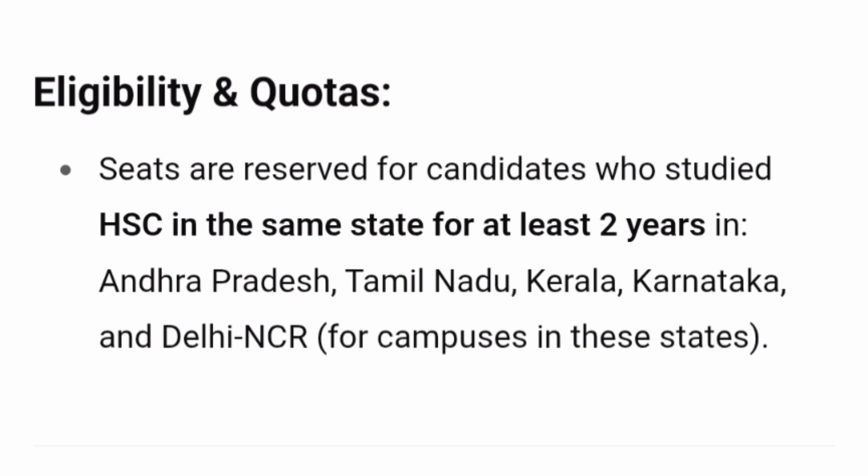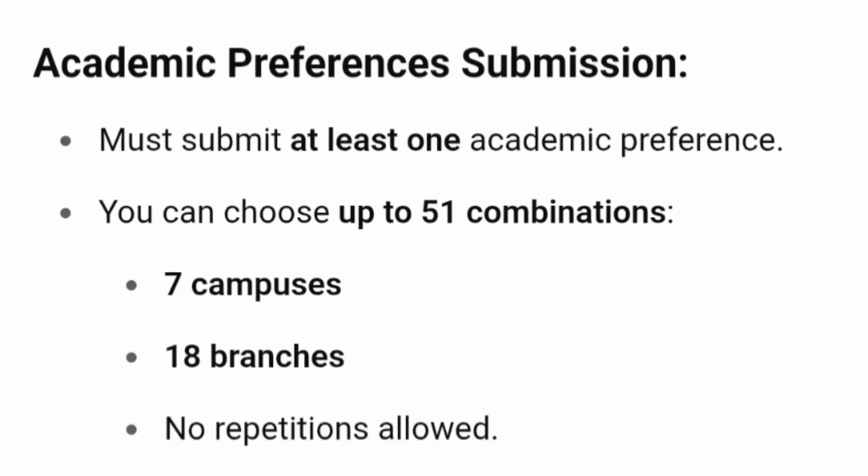Otherwise you will be considered an other-state candidate for that particular campus. For academic preference submission, you must submit at least one academic preference — that is the minimum. You can choose up to 51 combinations; with seven campuses and 18 branches available, you can put up to 51 campus-plus-branch combinations, which is the maximum limit.